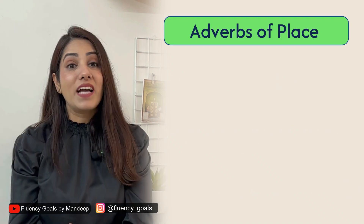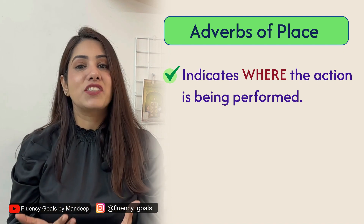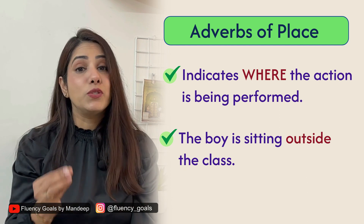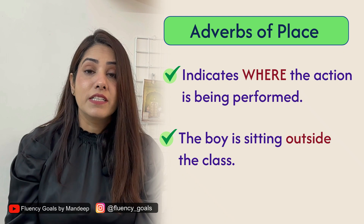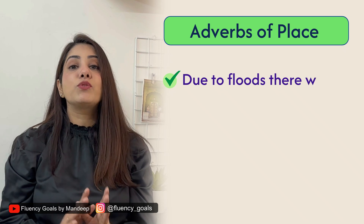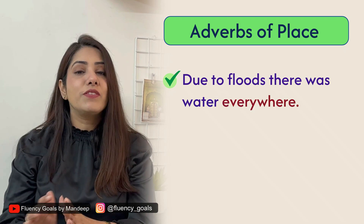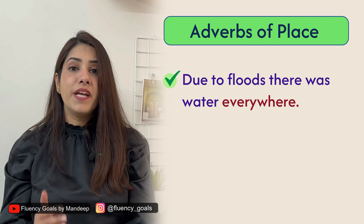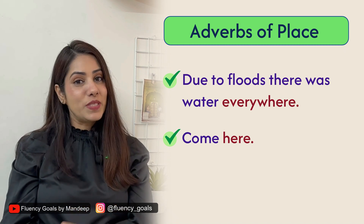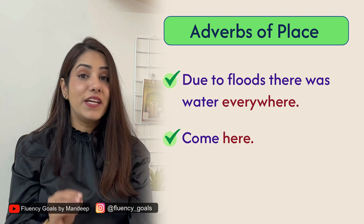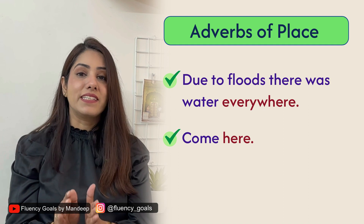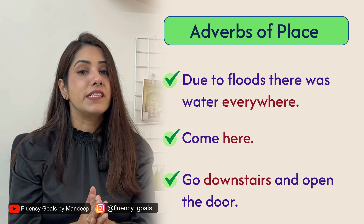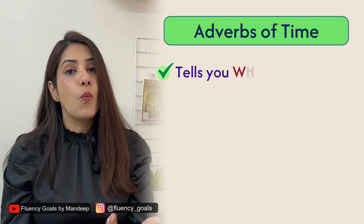Adverb of place indicates where the action is being performed. 'The boy is sitting outside' — outside tells you where the action of sitting is performed, so it's an adverb of place. 'Due to floods there was water everywhere' — everywhere indicates the place of action. 'Come here' — here is an adverb of place. 'Go downstairs and open the door' — downstairs is an adverb of place modifying the verb go.